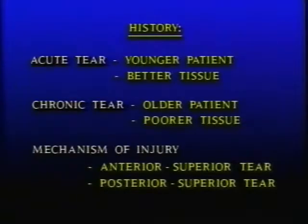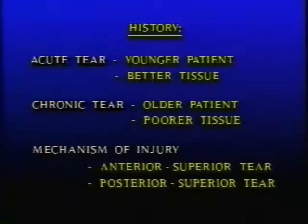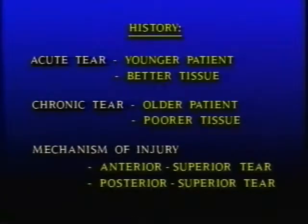The first step prior to an examination is an adequate history, which will often give insight into the type of problem which will be encountered. Acute tears which occur after a specific trauma typically affect the younger patient and are associated with smaller tears with better quality tissue. Chronic tears which occur in older individuals and are often insidious without a prior trauma are typically associated with poorer quality tissue.